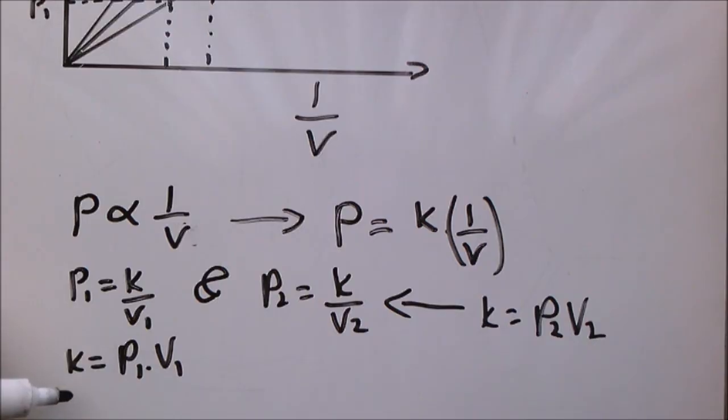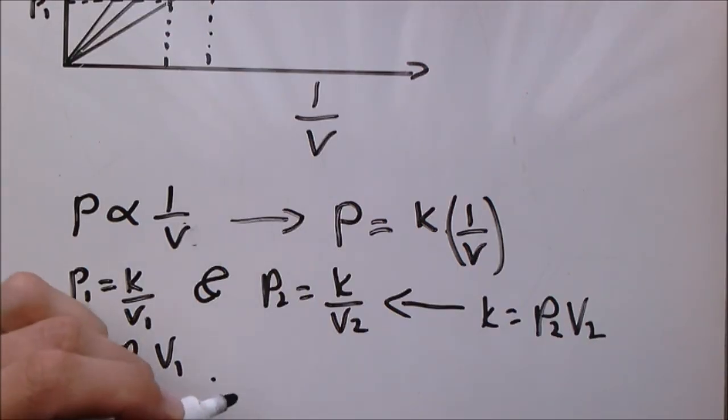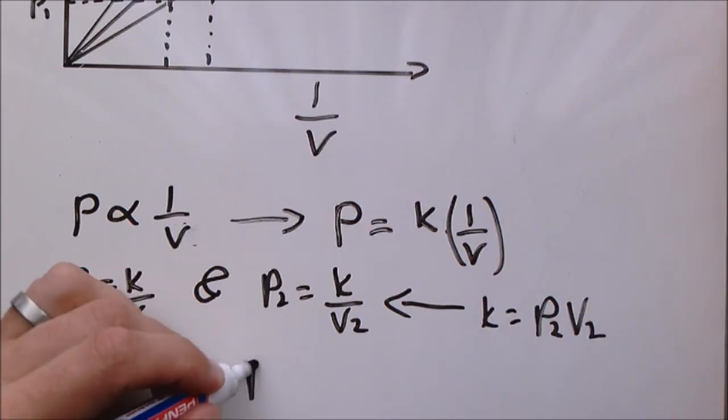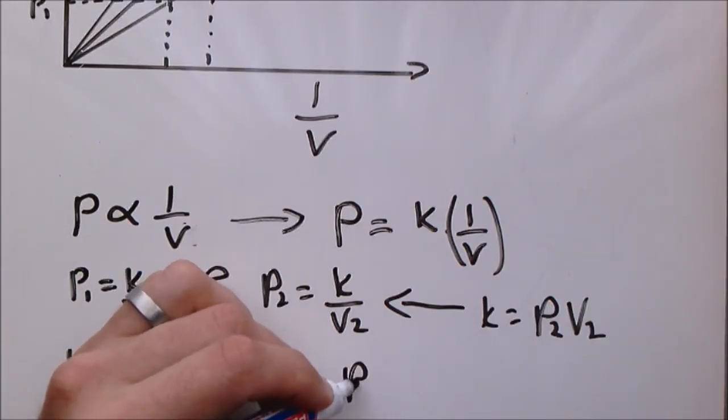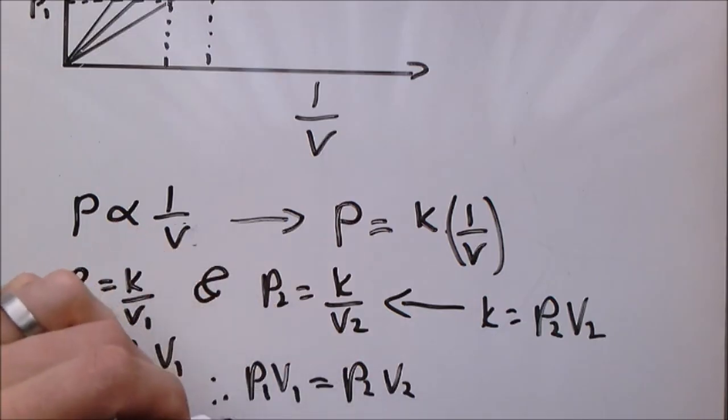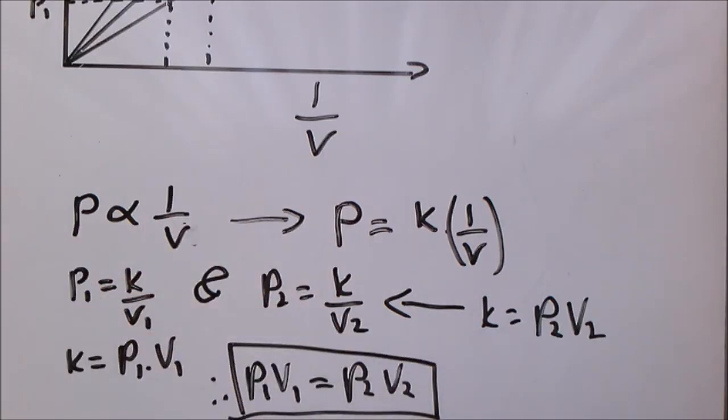In other words, Boyle's law will be able to be written as P1V1 equals P2V2. And this is Boyle's law. That is cool.